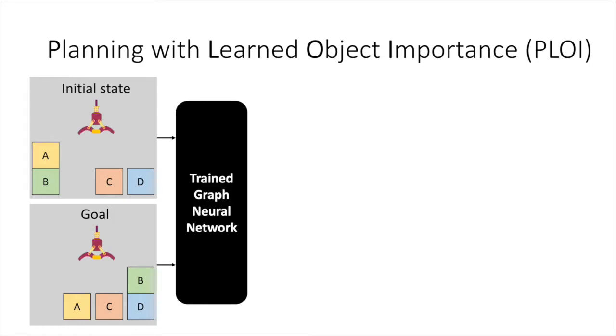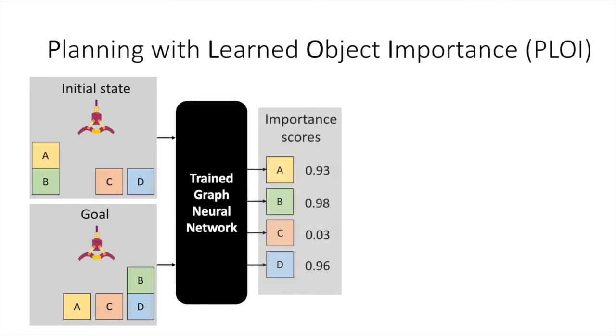In the first phase, we use a graph neural network that has been learned on smaller training problems to predict an importance score for each object in the state. In this example, to go from the initial state to the goal, the robot does not need to interact with block C in any way, and so we see the network assigns a low importance score to block C.